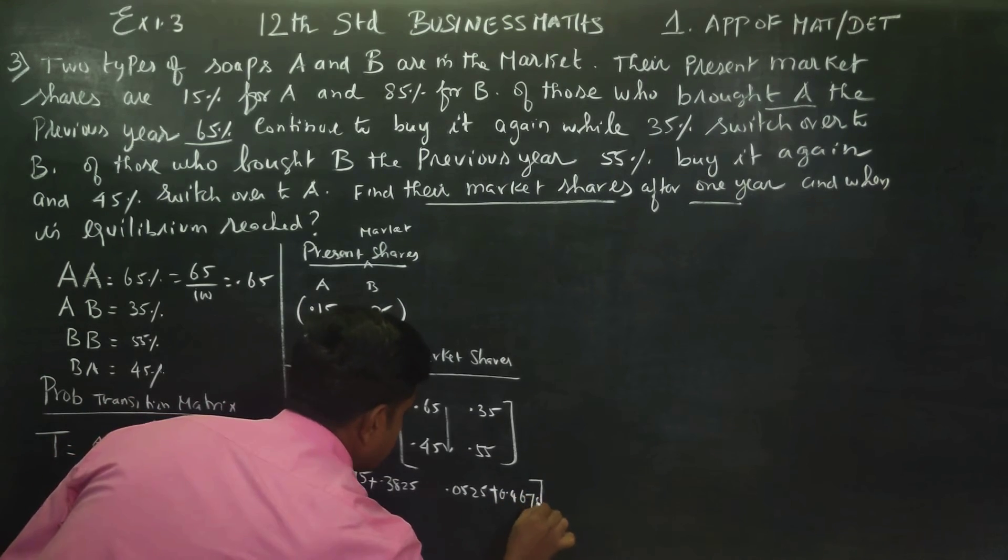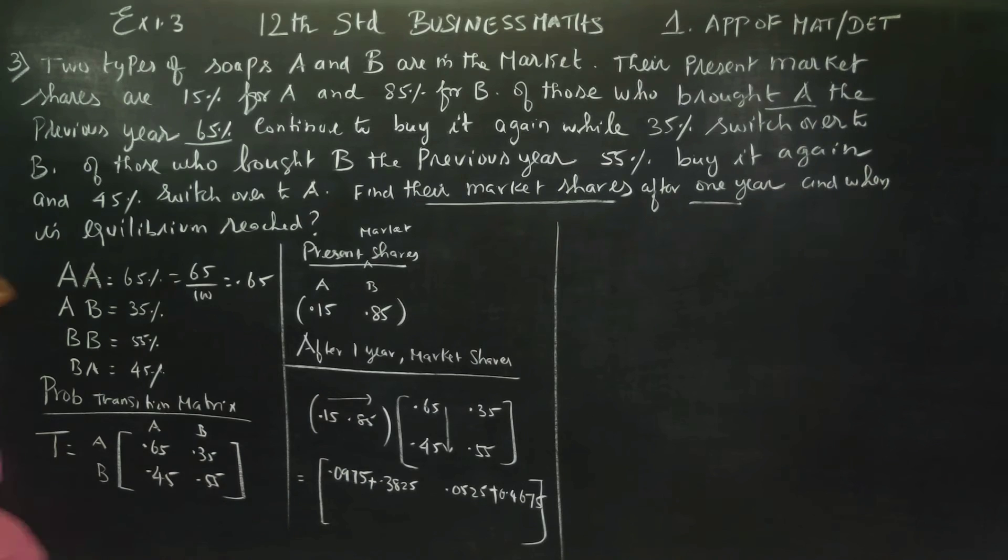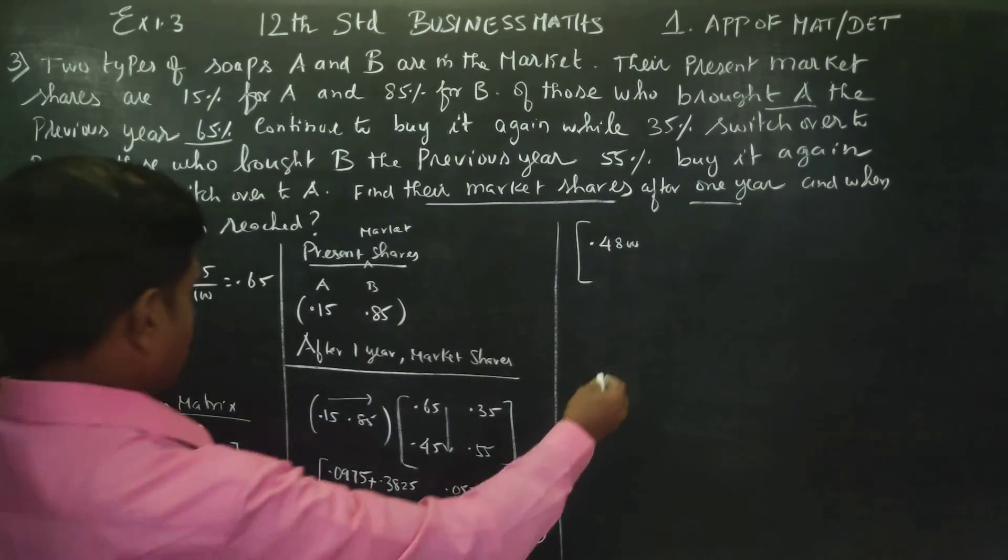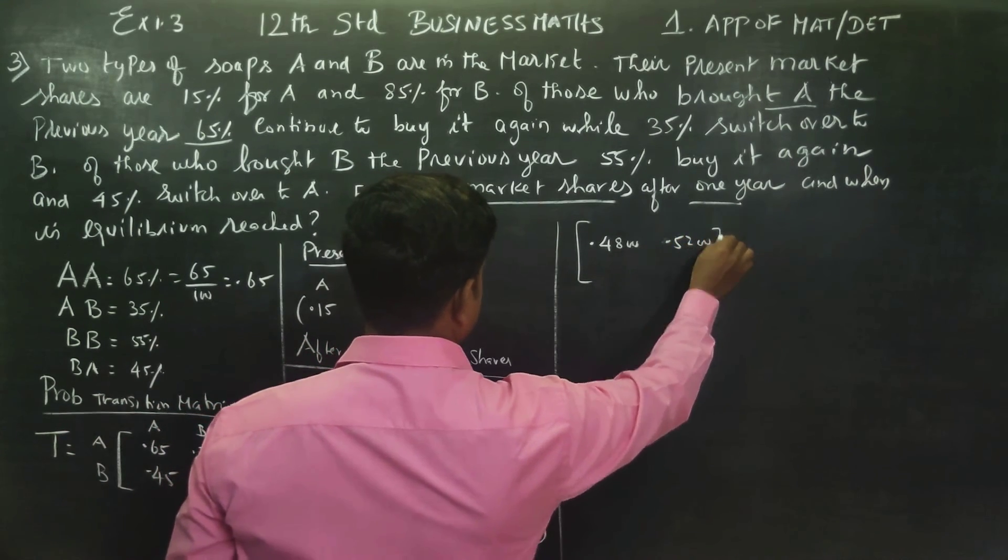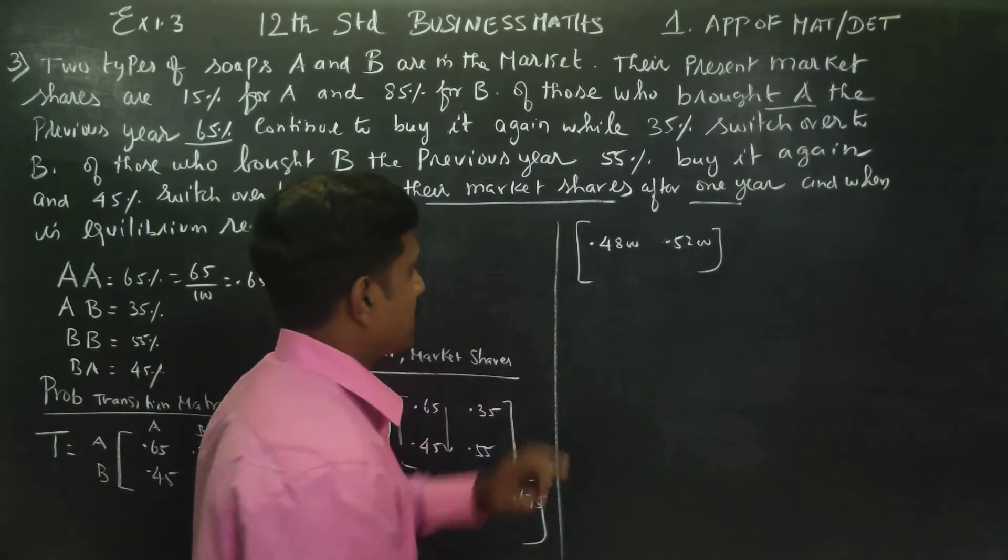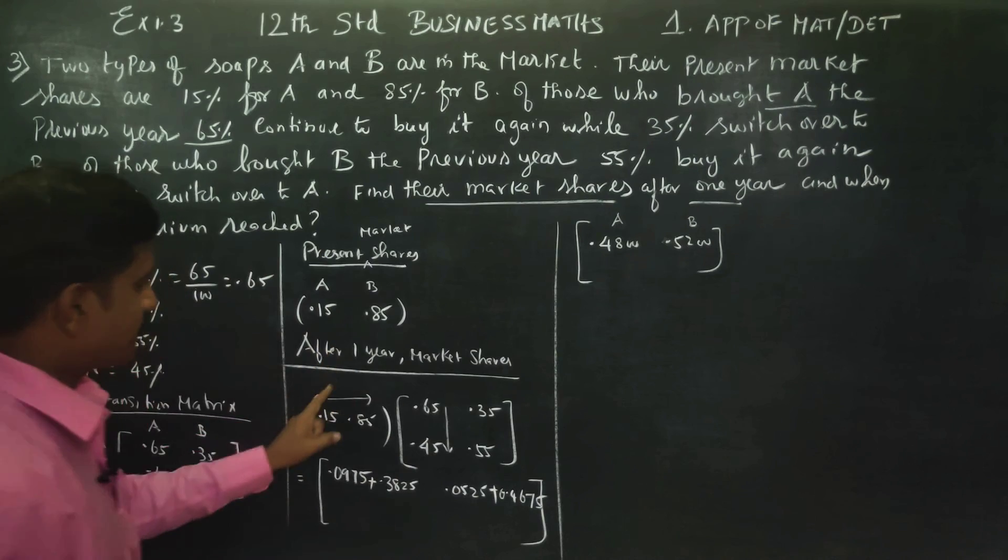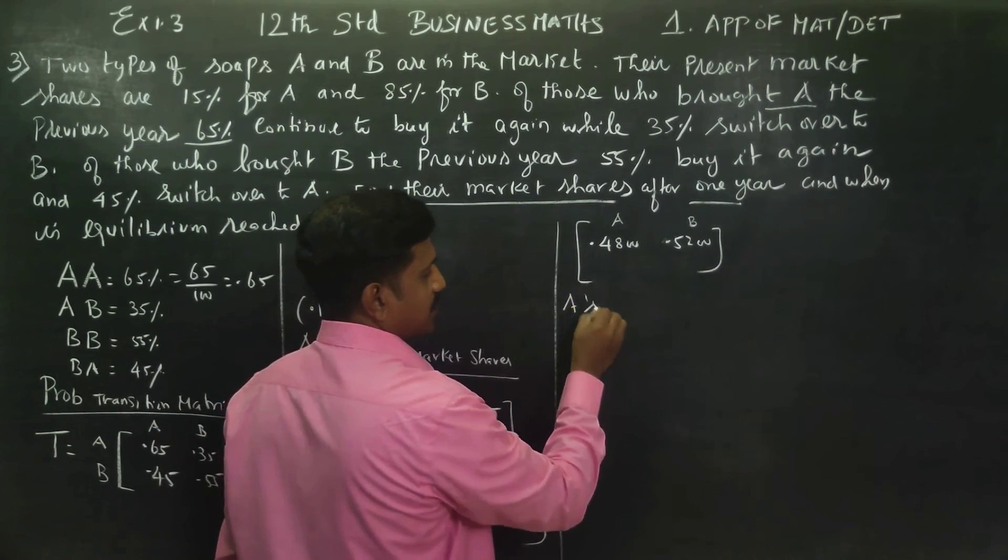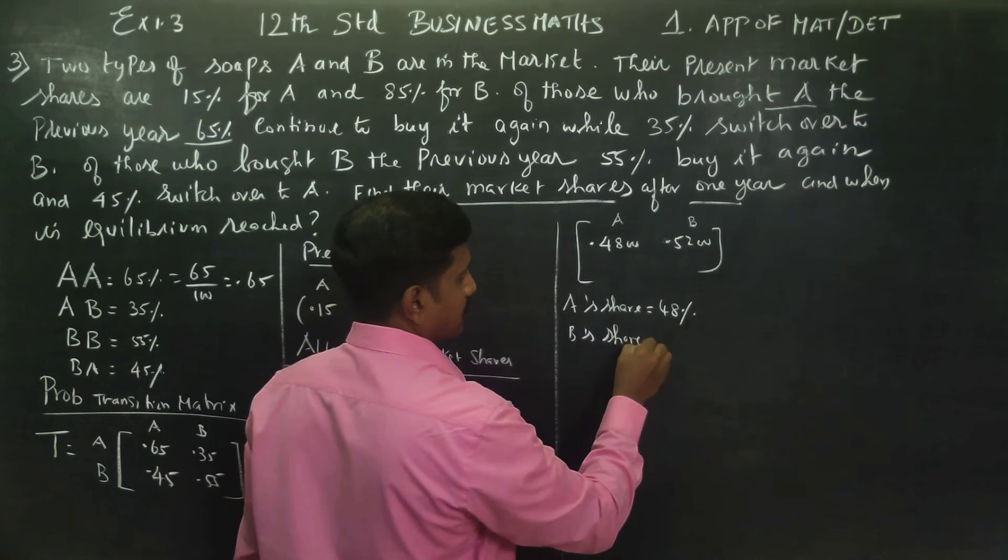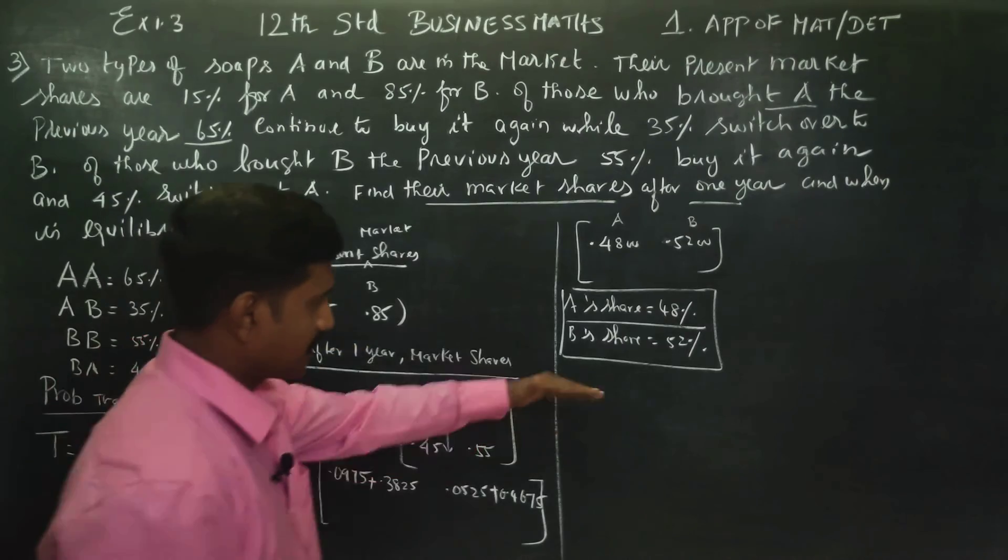You will get 0.48. So this is the share of A. This is the share of B. After one year, market share of A is 0.48 and B is 0.52.